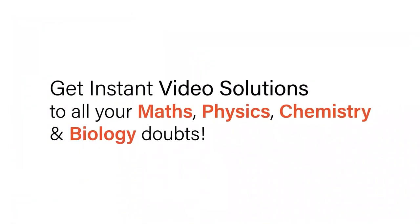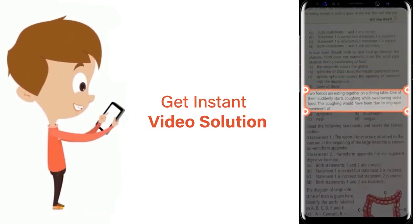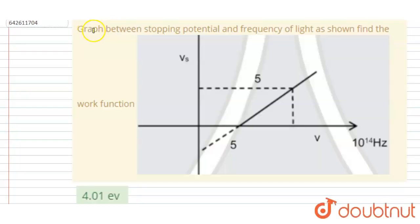With Doubtnut get instant video solutions to all your maths, physics, chemistry and biology doubts. Just click the image of the question, crop the question and get instant video solution. Download Doubtnut app today. Hello everyone, the graph between stopping potential and frequency of light is shown in the figure.